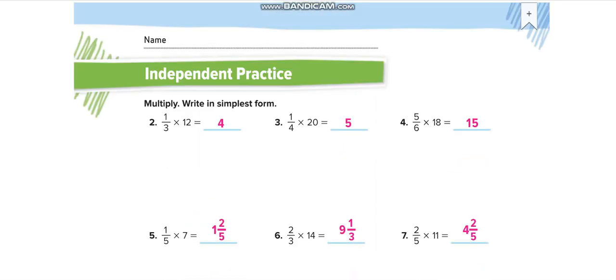This is independent practice. Let me solve 2 questions with you. 12 times 1 over 3 - 12 over 3, you will write it like this. 12 over 3, that is equal to 4. This one, 20 over 4, that is equal to 5. You can solve the remaining questions by yourself, and let me show you the answers so you guys can verify your answers after you finish.